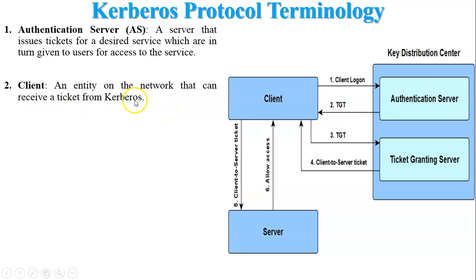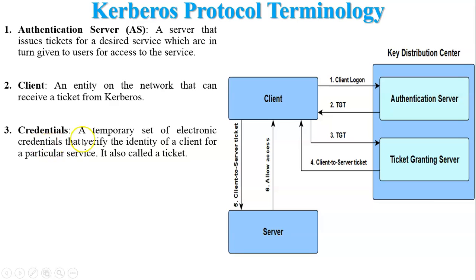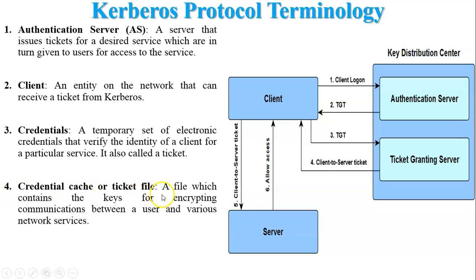Client: an entity on the network that can receive a ticket from Kerberos. The client accesses the ticket from the authentication server, then provides authentication to the Ticket Granting Server, and the Ticket Granting Server provides another ticket to access the server. Credentials: a temporary set of electronic credentials that verify the identity of a client for a particular service — this is called a ticket. The ticket includes the user's credentials and identity. A credential cache or ticket file is a file containing the keys for encrypting communication between a user and various network services.